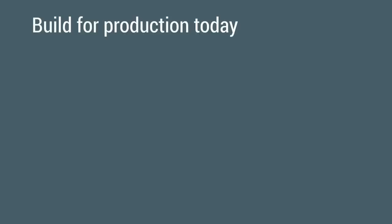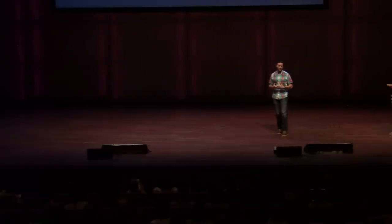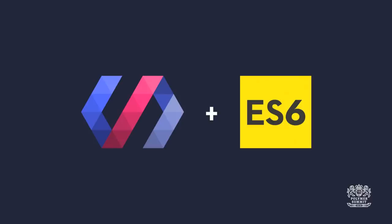So how do you use this stuff today if you want to use it in production? There are three things to do. First, always use Vulcanize — a great tool for concatenating all your HTML imports into a single file, great for performance. Use the inline-script and inline-CSS flags to bring all your CSS and JavaScript into a single file. Next, pipe that through CRISPR, a tool on NPM we authored that rips out the JavaScript from that file and produces a standalone app.js. Then run that through Babel, the transpiler with great community support, and you get an ES5 equivalent you can run in any modern browser. All the demos are up on GitHub — feel free to run them and ask us questions, because we're still exploring ES6 ourselves.